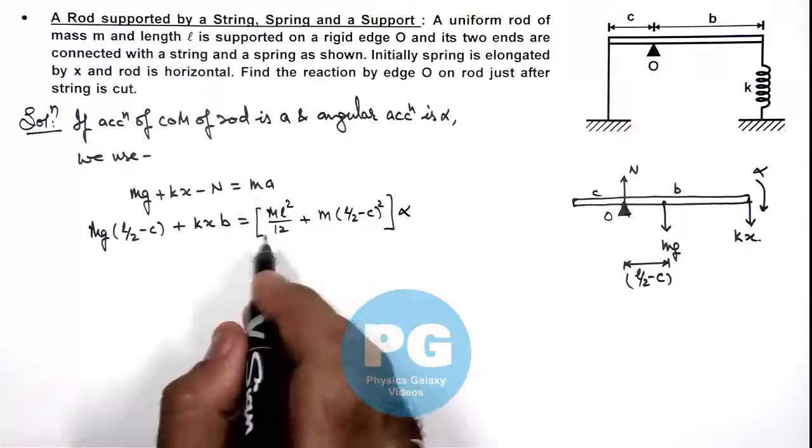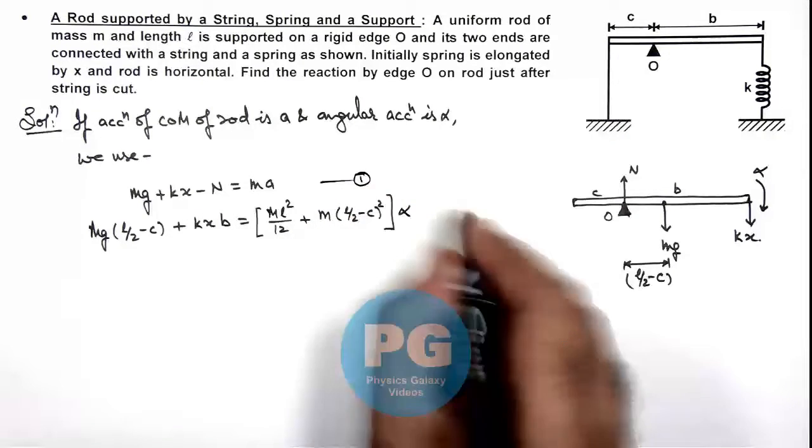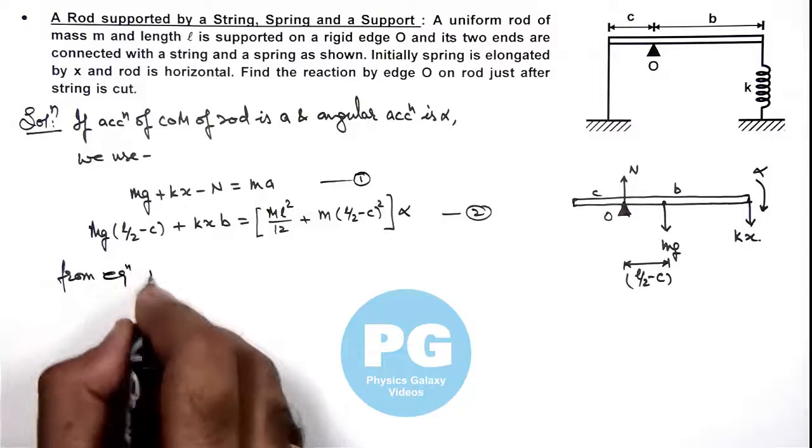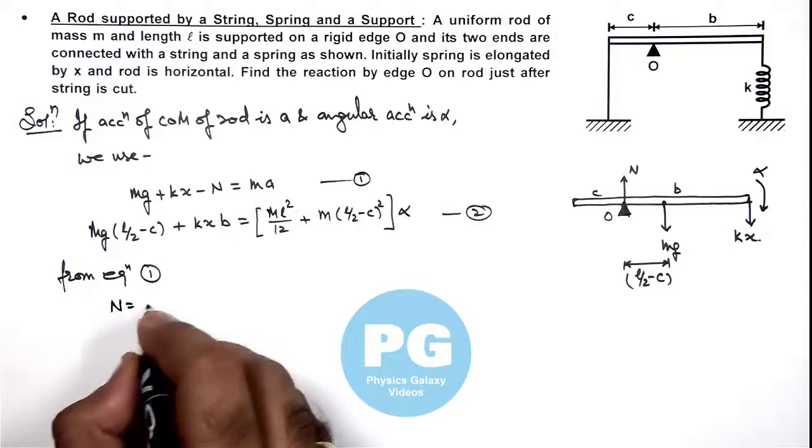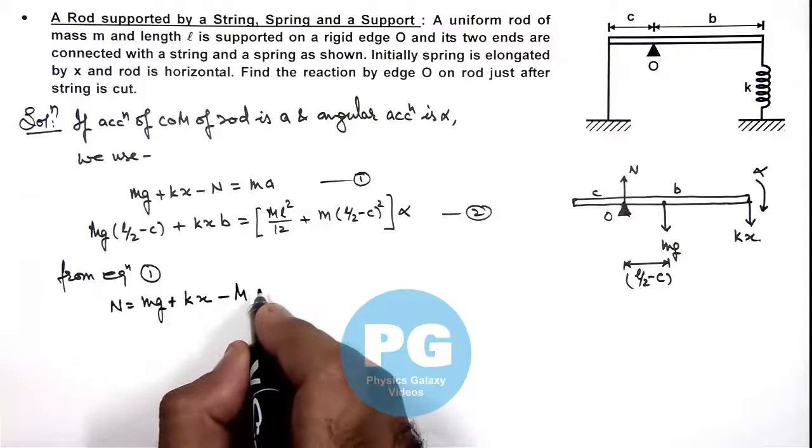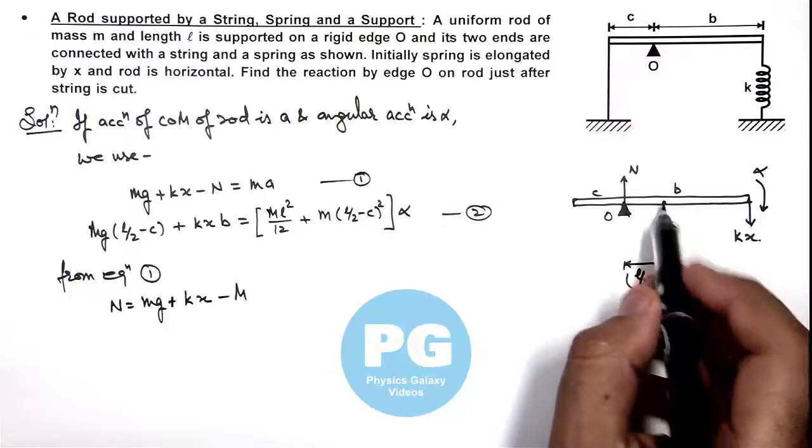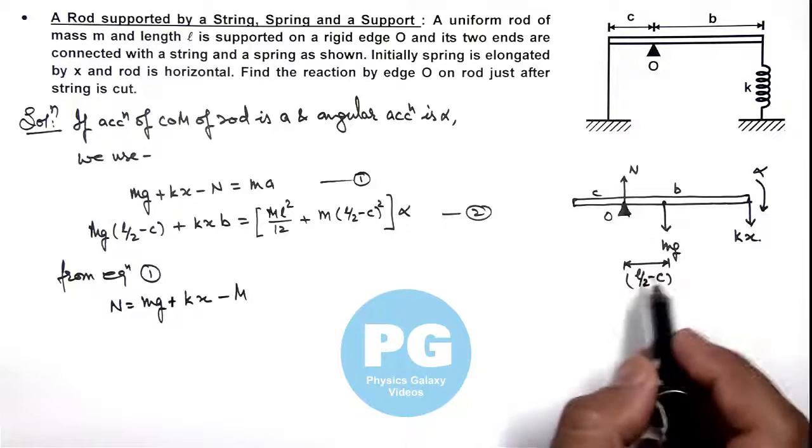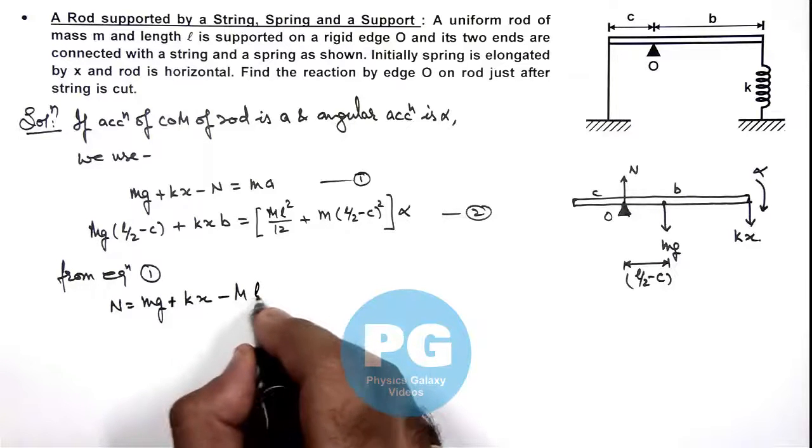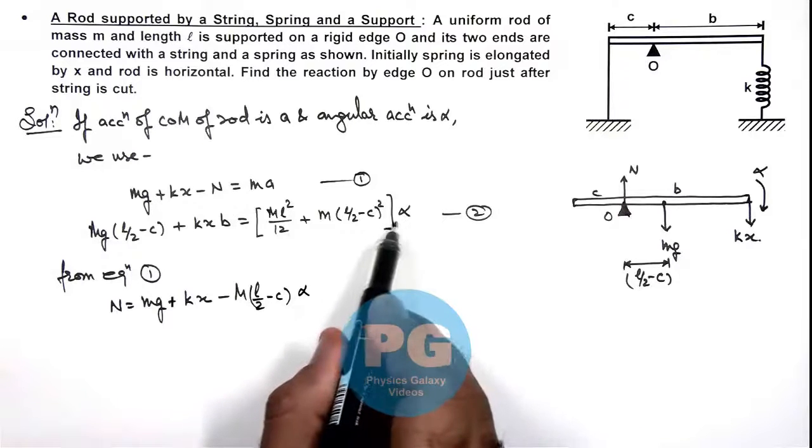Now solving these equations here we can see the value of N we are getting is, if this equation 1 and this equation 2, here we can write from equation 1 this gives the value of N is equal to mg plus kx minus m ay. And acceleration of this center of mass of the rod can be given as l by 2 minus c multiplied by angular acceleration alpha. So this can be written as l by 2 minus c multiplied by angular acceleration alpha, which we can substitute it from here.